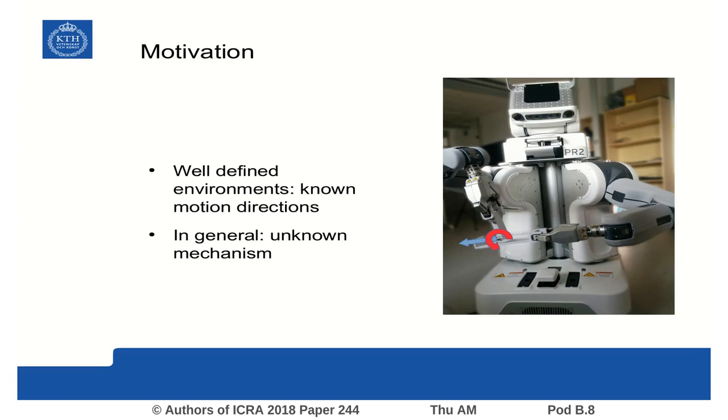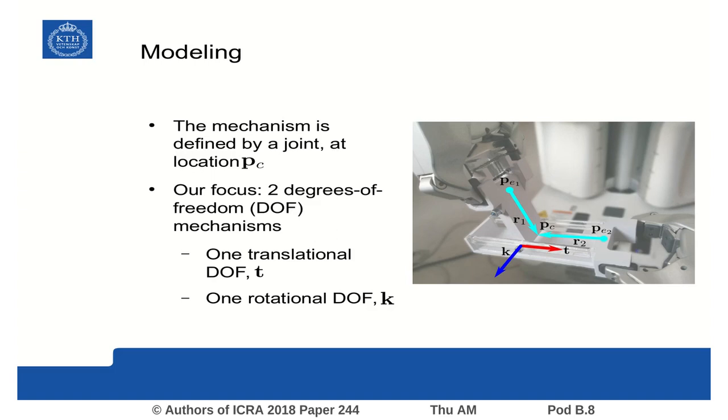In unstructured environments, however, an identification method is required in order to determine the properties of a mechanism. These are the direction of the available degrees of freedom and location of the mechanism's joint.